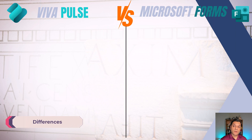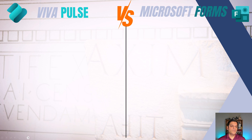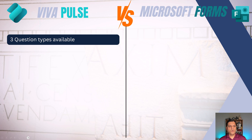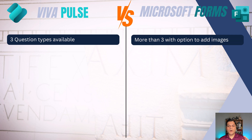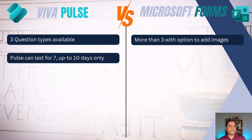Now let's focus on the differences. First: Viva Pulse has only three question types — Rating, Multiple Choice, and Open Text. Microsoft Forms has many more, and it supports adding images at both the overall form level and at each individual question level, which is a big difference. In Viva Pulse, the pulse duration is set for a minimum of seven days and can be extended up to ten days.